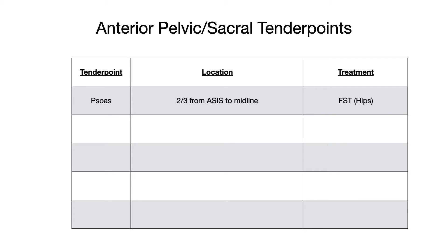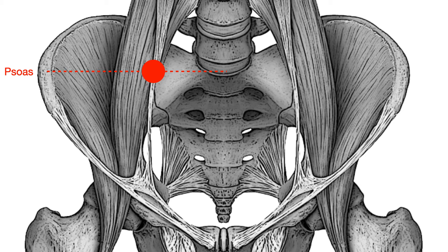The treatment position for the psoas tender point is flexion, side bending towards — FST: flexion, side bend towards. Specifically, you're using the hips when you do this treatment, which is why hips is noted in parentheses. As you can see on the diagram, the psoas tender point is located two-thirds of the way from roughly where the ASIS is, out laterally, toward the midline where the vertebrae are.